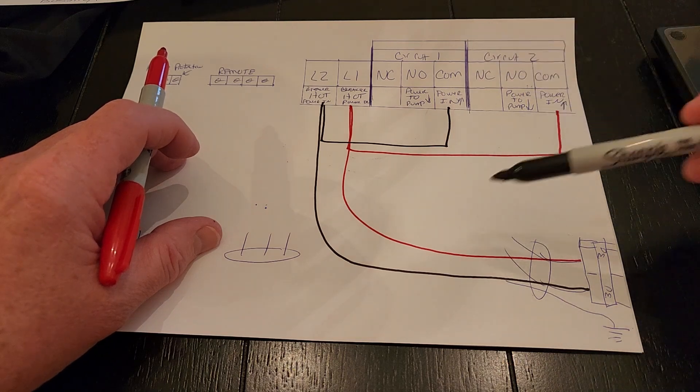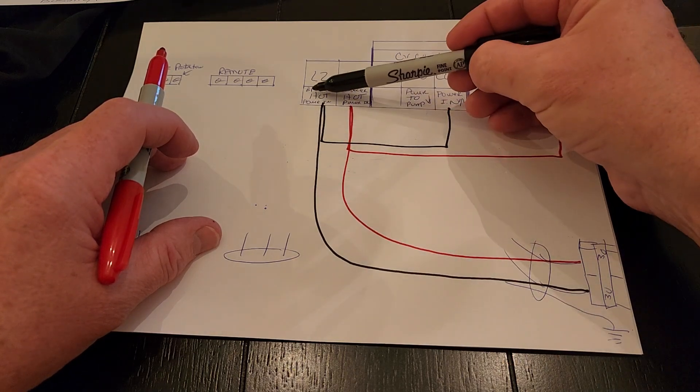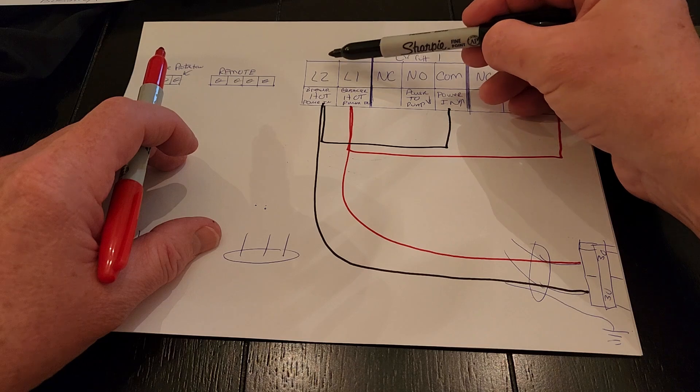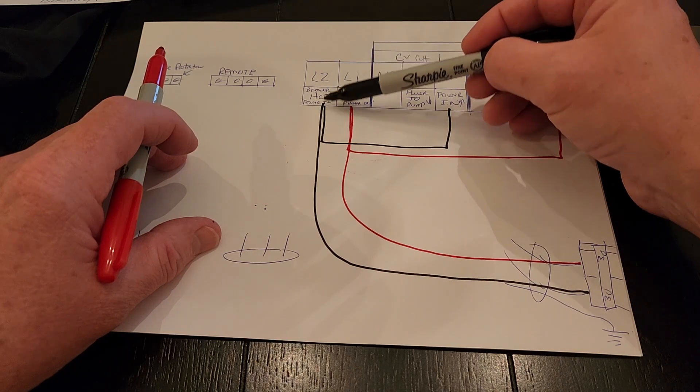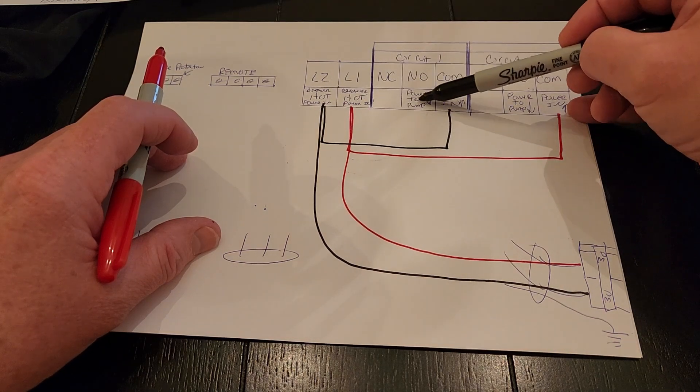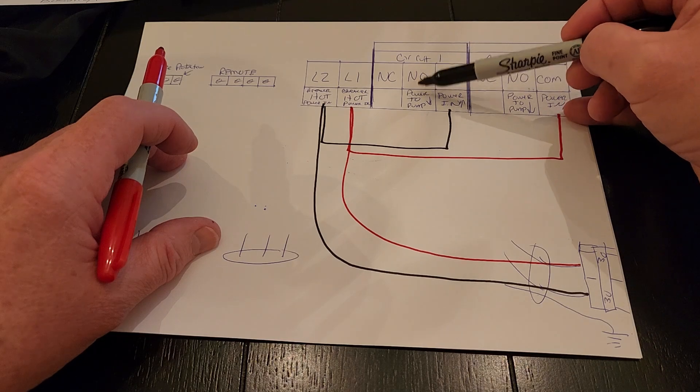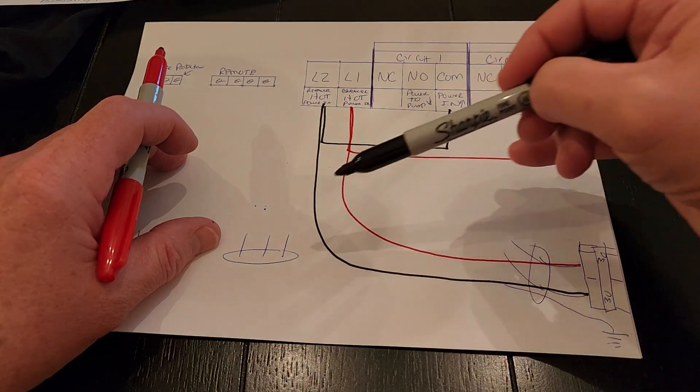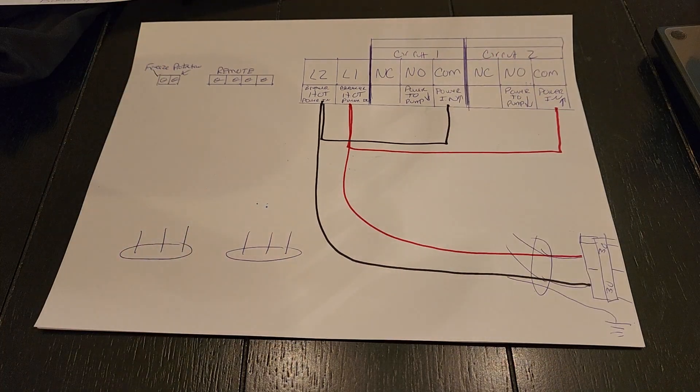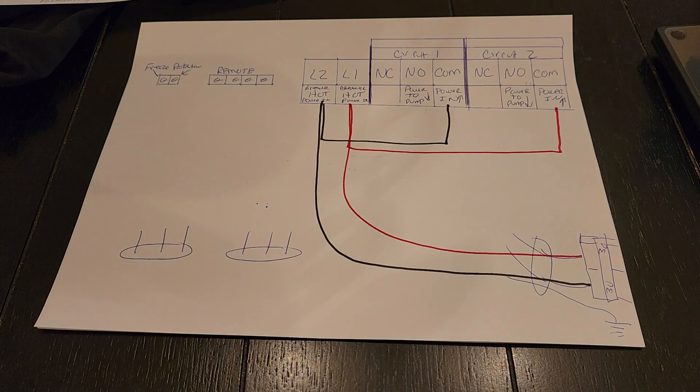Like I said, power comes into the box here, goes to the relay system, and then when the pump turns on, it comes out of L2, powers the relay, which turns on normally open, makes it closed, which sends power to the pump. So that's how you get power to the circuit.